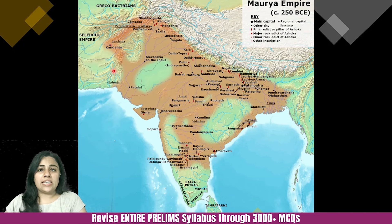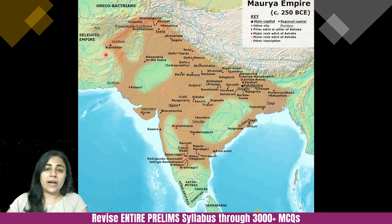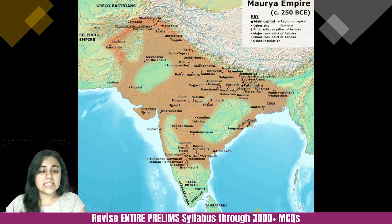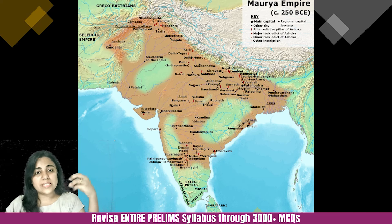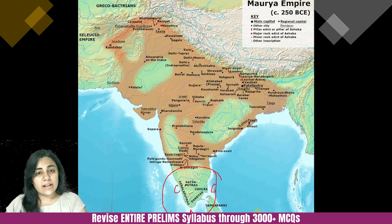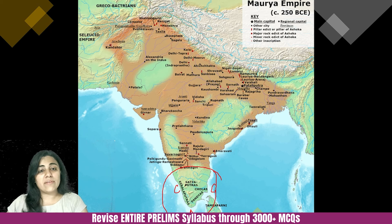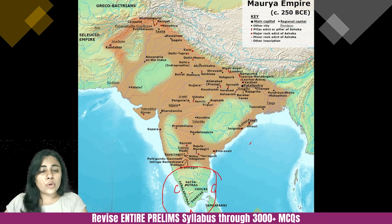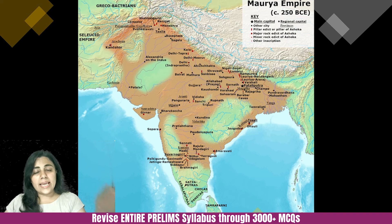Before starting, note how wide the Mauryan Empire was. It was the first truly pan-India empire, meaning it covered the entire Indian subcontinent. The southernmost part of India — the area of the Cheras, Cholas, and Pandyas — formed the Sangam age, which was a civilization of its own. Even today there is a north-south cultural divide, and historically the Mauryan Empire was not able to totally take over the Sangam age area.